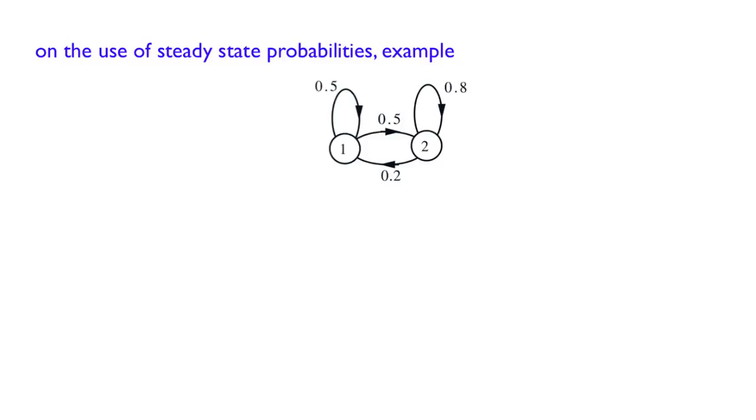We did write down the complete balance equations for this chain and found the steady-state probabilities before. Notice that we can find these by using the trick which we introduce for birth and death processes. You cut the chain along this line and argue that the frequency of transition of this type has to be the same as the frequency of transition of this type.